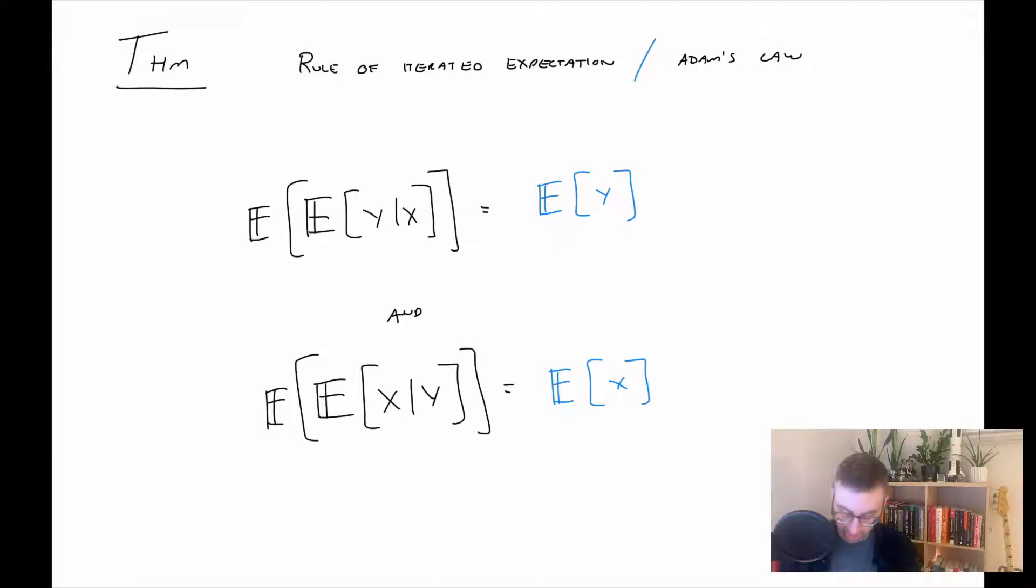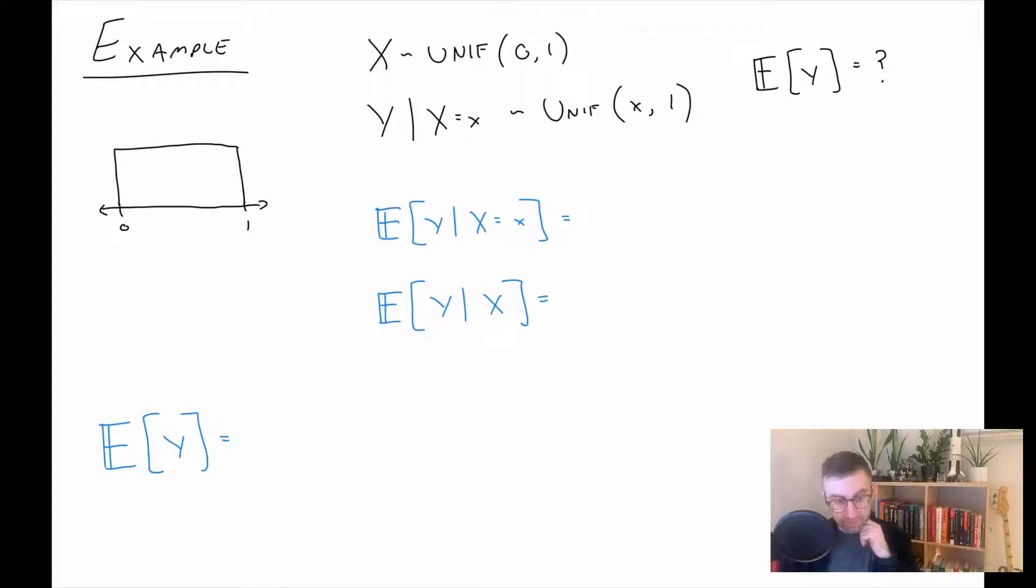So an example. In this example, X is a uniform random variable on the interval zero to one. Now we're going to define Y condition on X, so the distribution of Y will be between X and one.